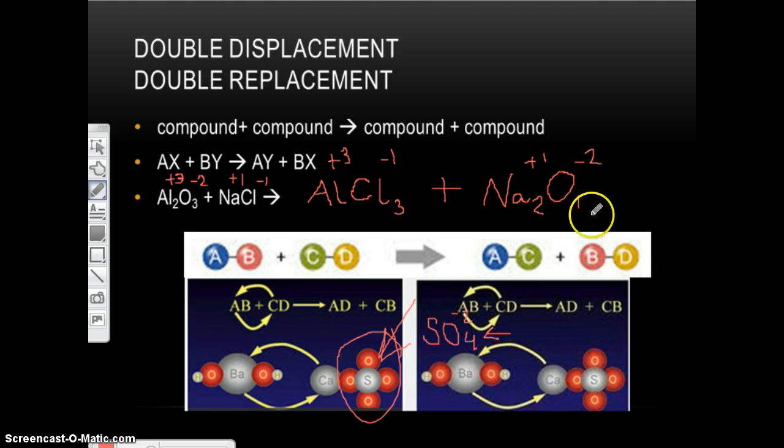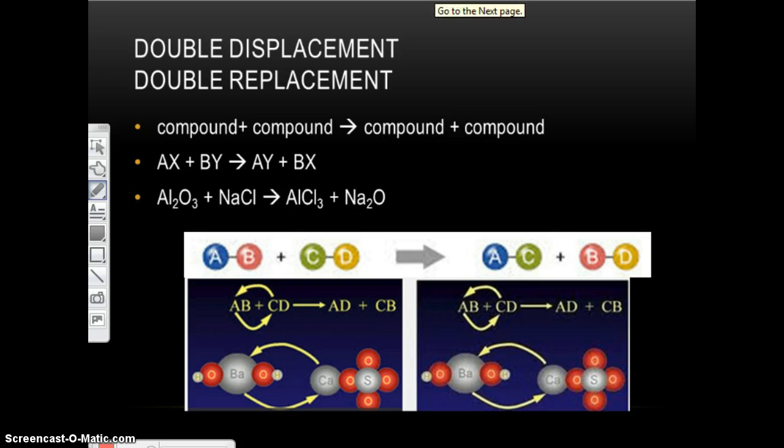We're going to do something in the next lesson to kind of remedy that and make it legal according to the rules of chemistry. But for now, the big thing, remember that when you make your formulas, you've got to start from scratch. So again, aluminum oxide plus sodium chloride yields aluminum chloride plus sodium oxide.